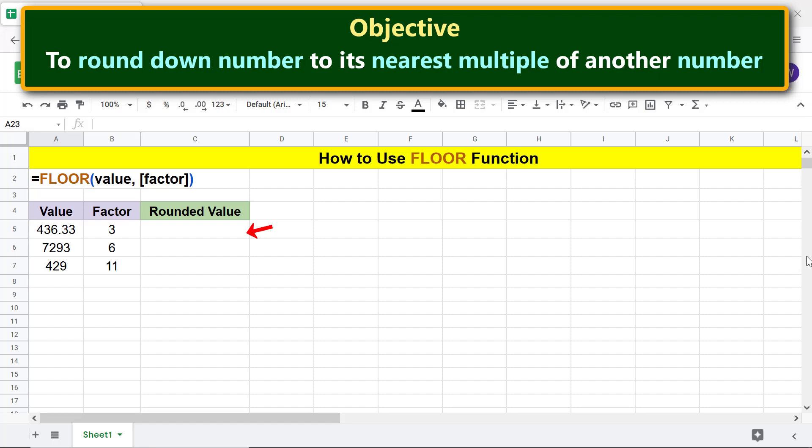First, type equals FLO and select FLOOR. For value, click this cell, type comma.